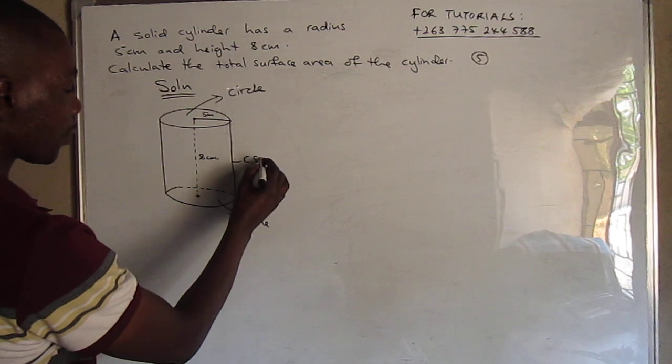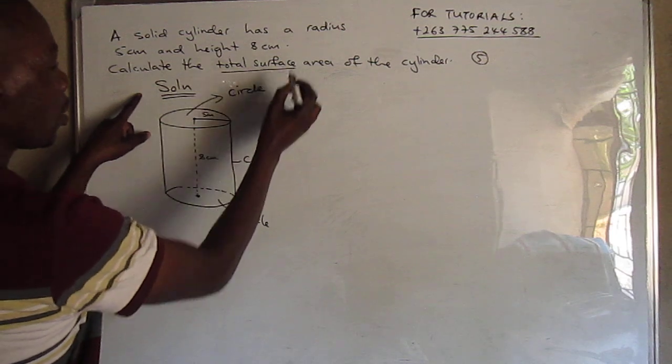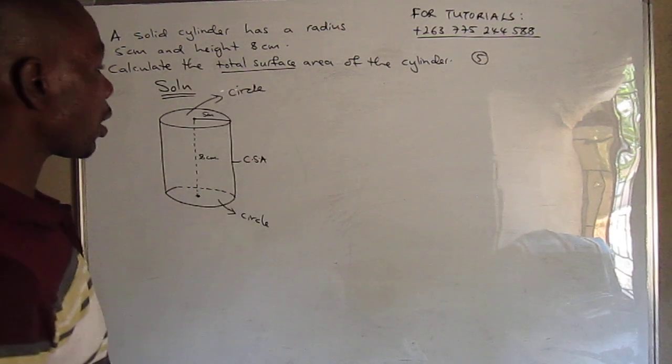We have the curved surface area. So to find the total surface area, we have to add all these areas. So we can come up with a formula from this.